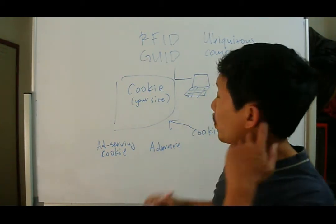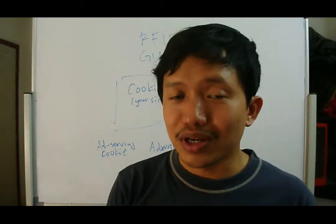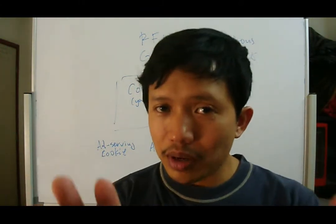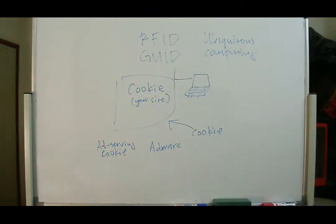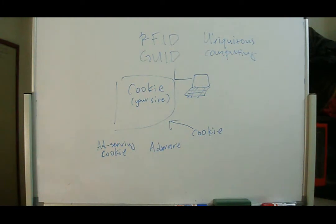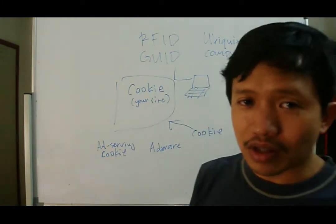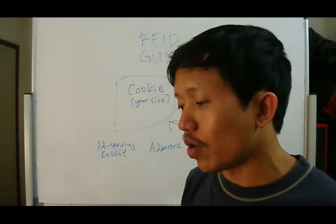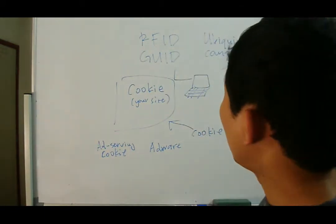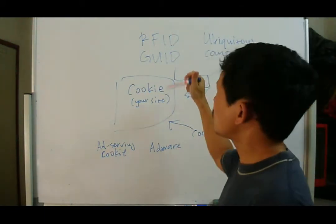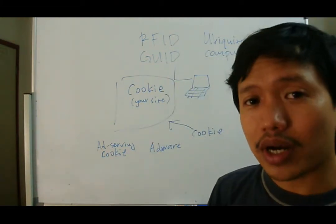I'm a bit nervous because I'm not entirely sure when the battery of this camera will run out, so please wait a bit. Okay, I think we should have time for all four technologies that can erode privacy online. Let's talk about Global Unique Identifier.